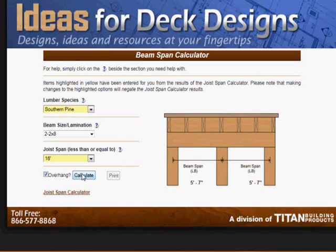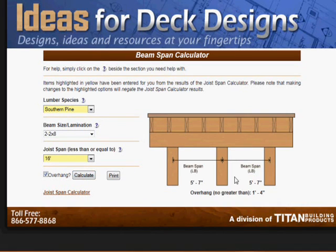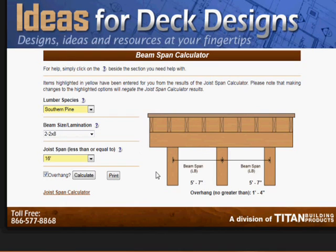But let's add an overhang in there and now calculate. It tells us that the overhang can be no greater than one feet four inches from here to here. And so this will work with the drawing that you've done.